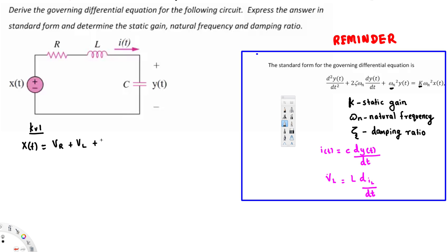We can write: X(t) = V_R + V_L + V_C. Instead of writing V_C we write Y(t), because the voltage across the capacitor is already expressed as Y(t). So we have X(t) = V_R + V_L + Y(t).